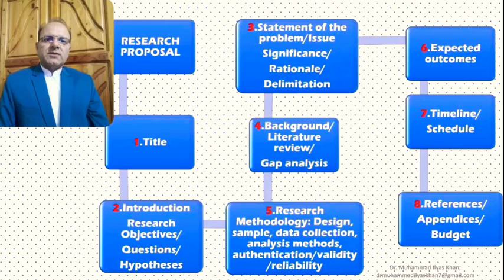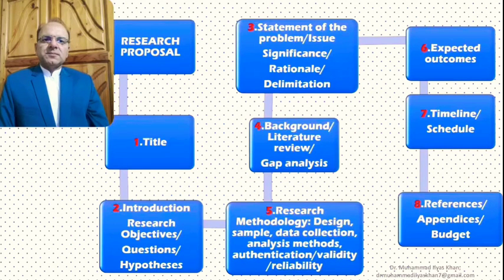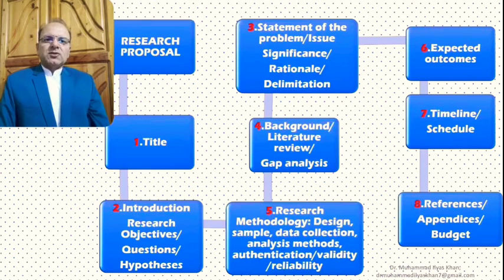The methodology section should describe in what ways data will be collected — for example, interviews or questionnaires — and why those data collection methods will be used. It should also describe how the obtained data will be analyzed: for example, thematic analysis might be suggested for qualitative data, and statistical analysis for quantitative data. This section also includes a description of authentication processes and validity and reliability issues — what will be done to make the research process authentic and to establish validity and reliability.